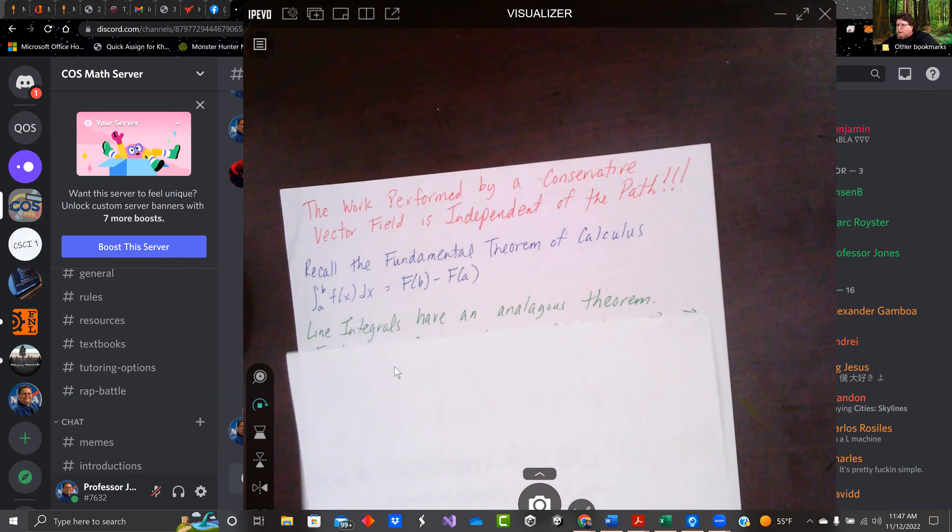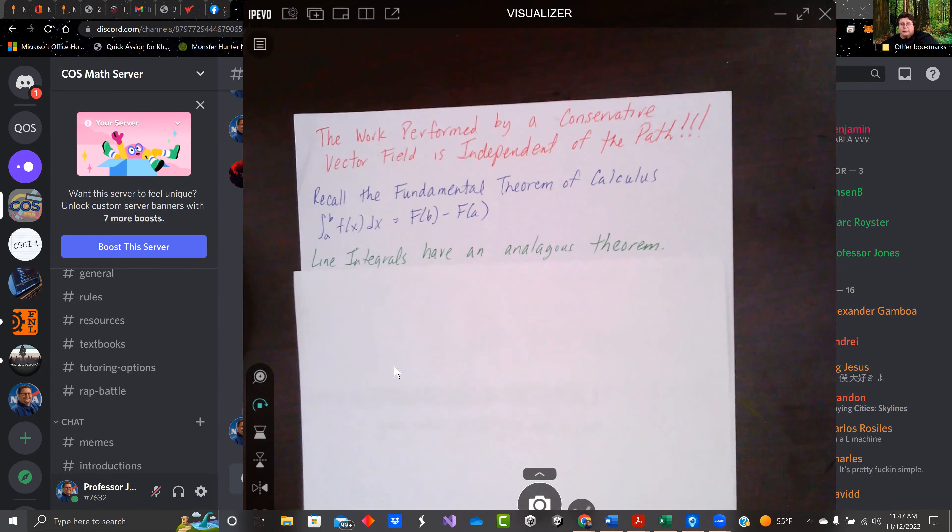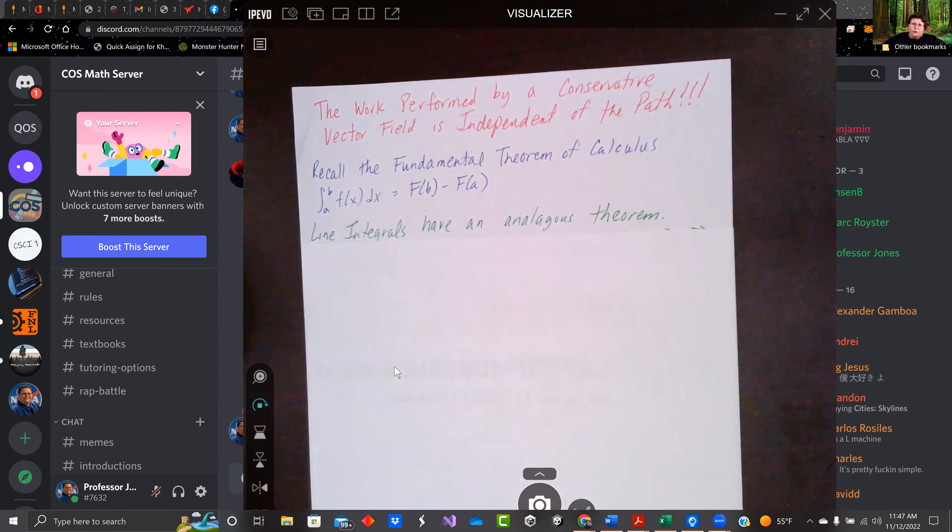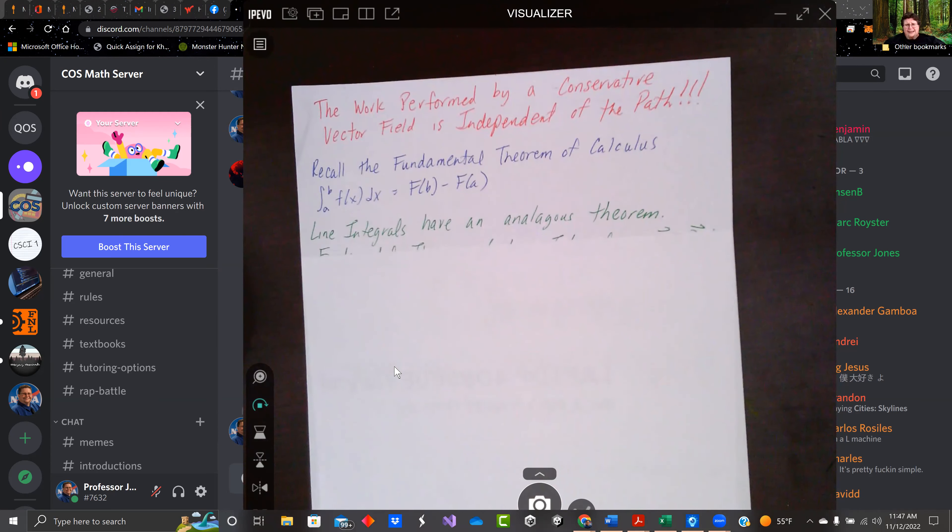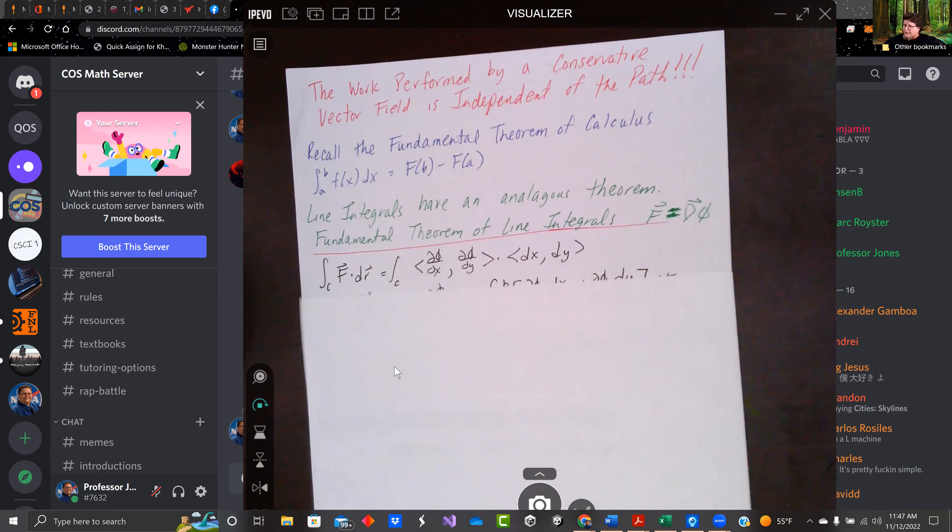So the work performed by a conservative vector field is independent of the path. If you recall from the fundamental theorem of calculus, the integral of a to b, f of x dx equals big F of b minus big F of a. The line integral does have an analogous theorem.